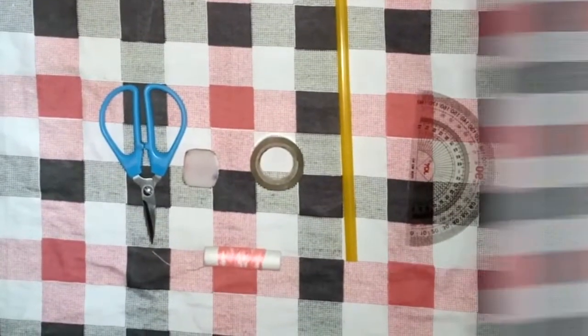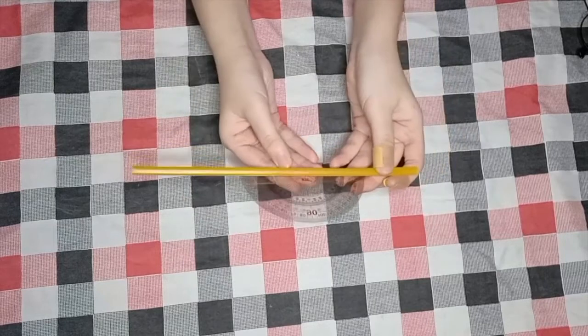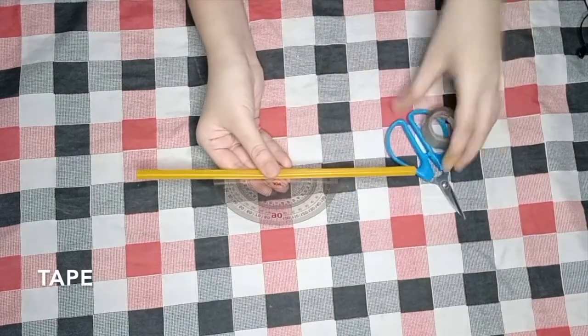First, prepare the materials needed. Second, tape the straw at the baseline of the protractor.